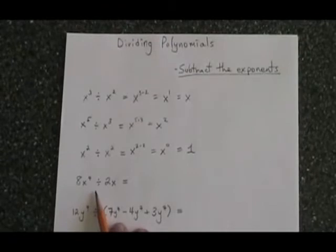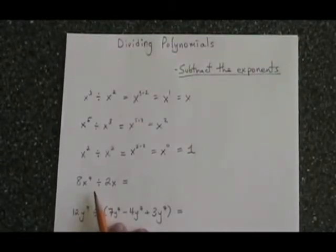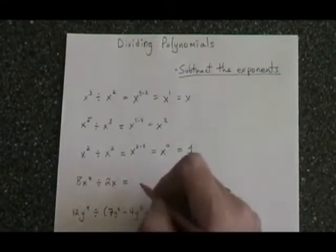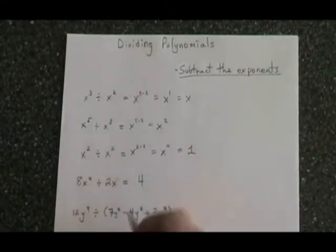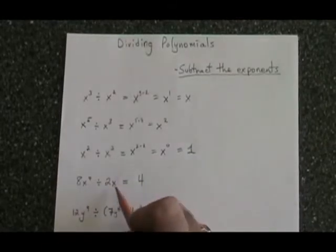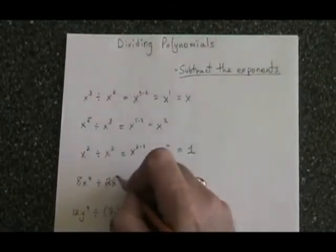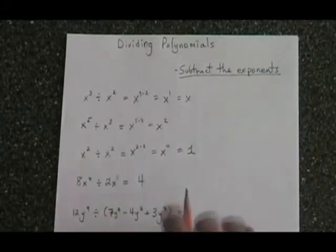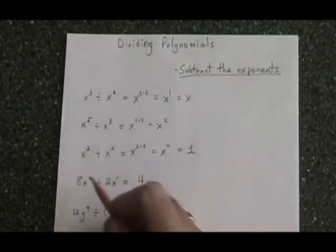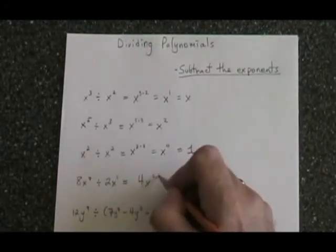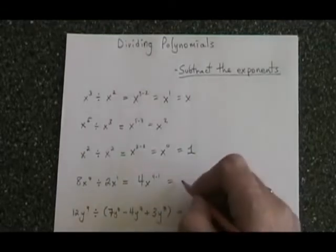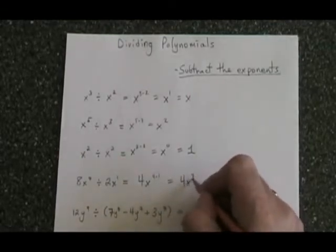In this example, we have numerical coefficients involved, but that doesn't change anything. We'll just divide our numerical coefficients first. 8 divided by 2 is equal to 4, and we have x to the 4 divided by x. Well, we know that x is the same as x to the 1, so we can write 4 minus 1 here as our exponent, and therefore, 4x cubed is the answer.